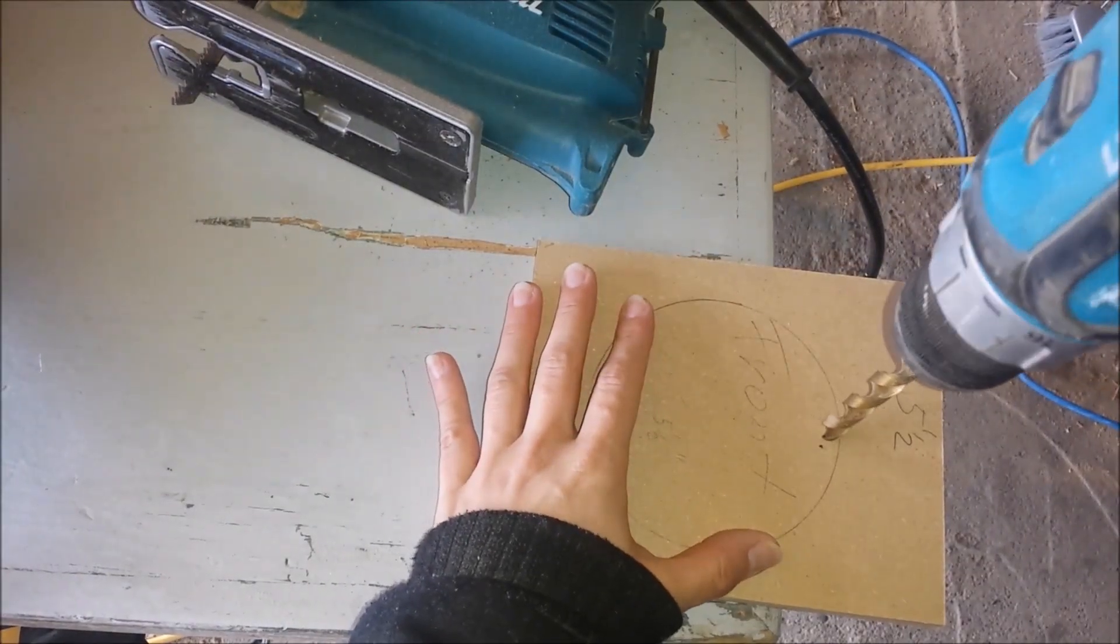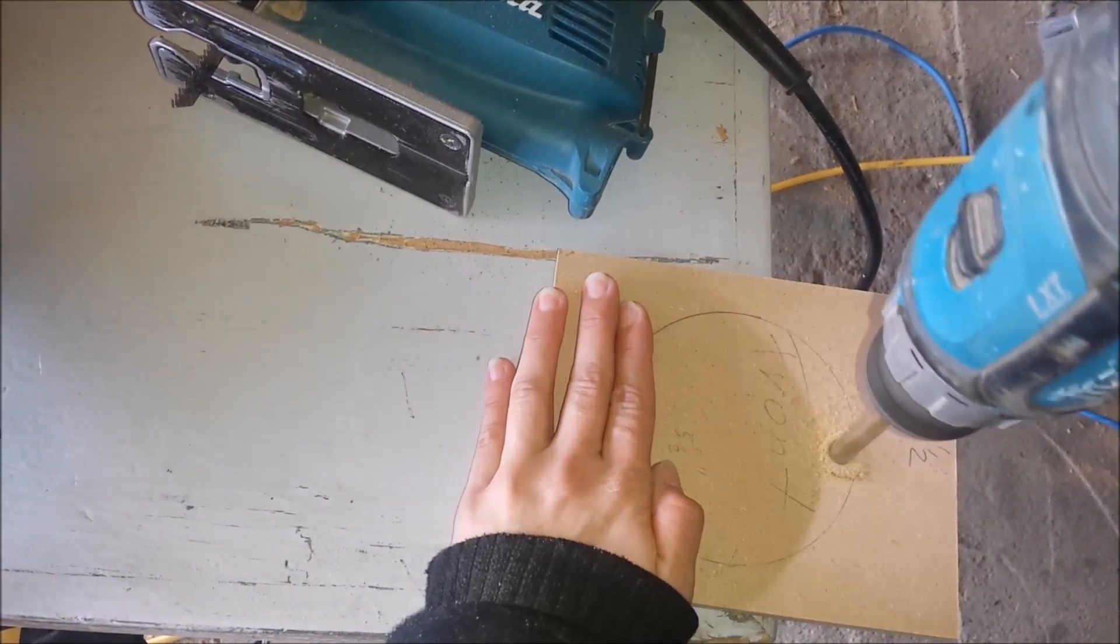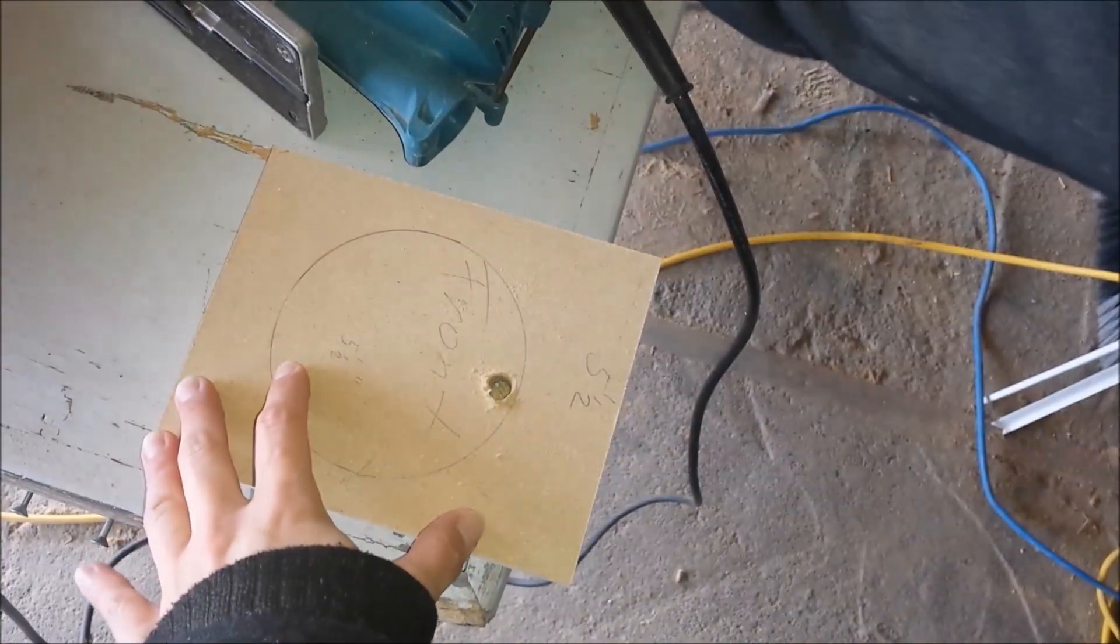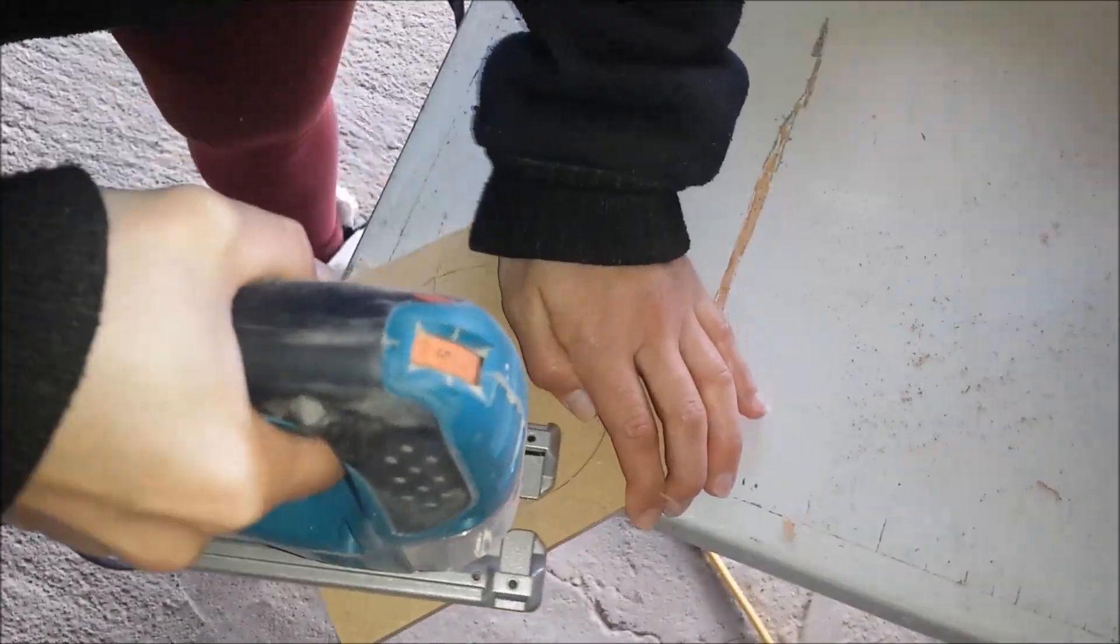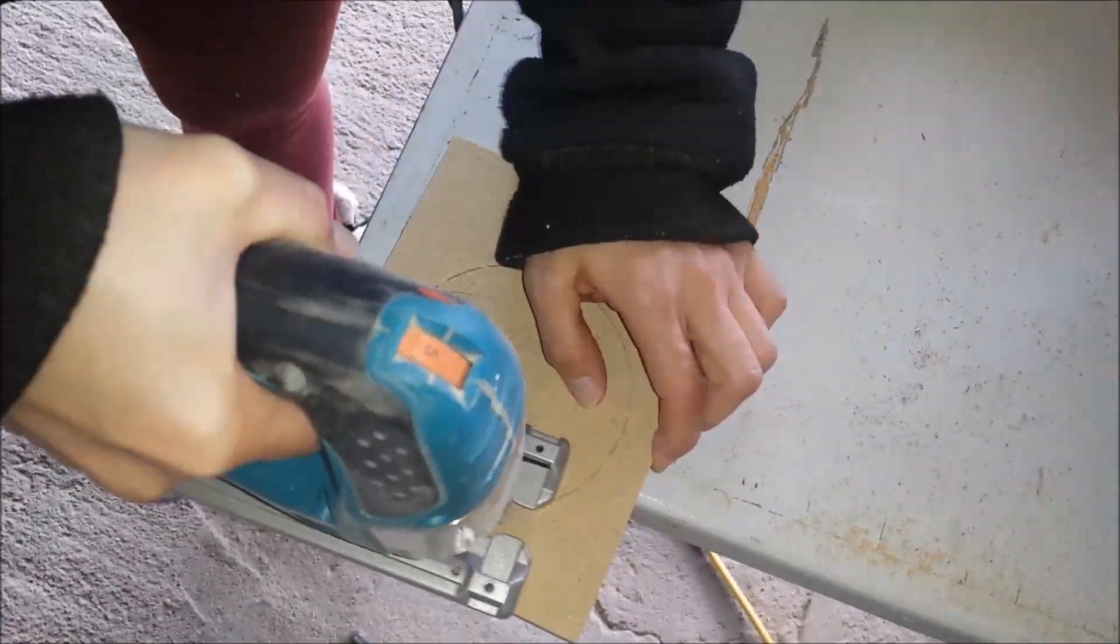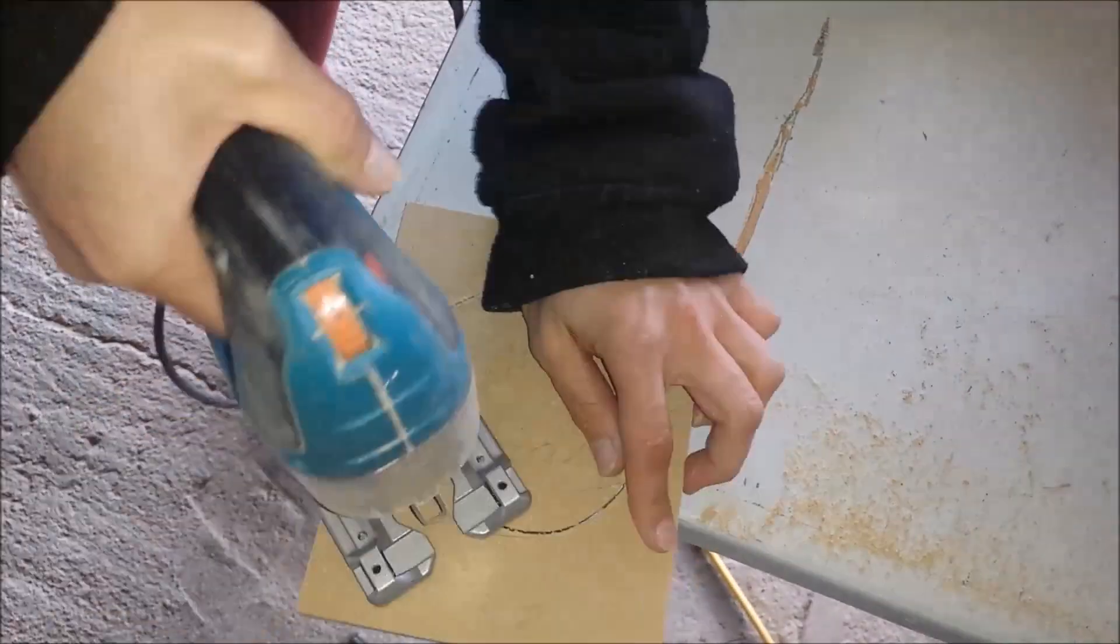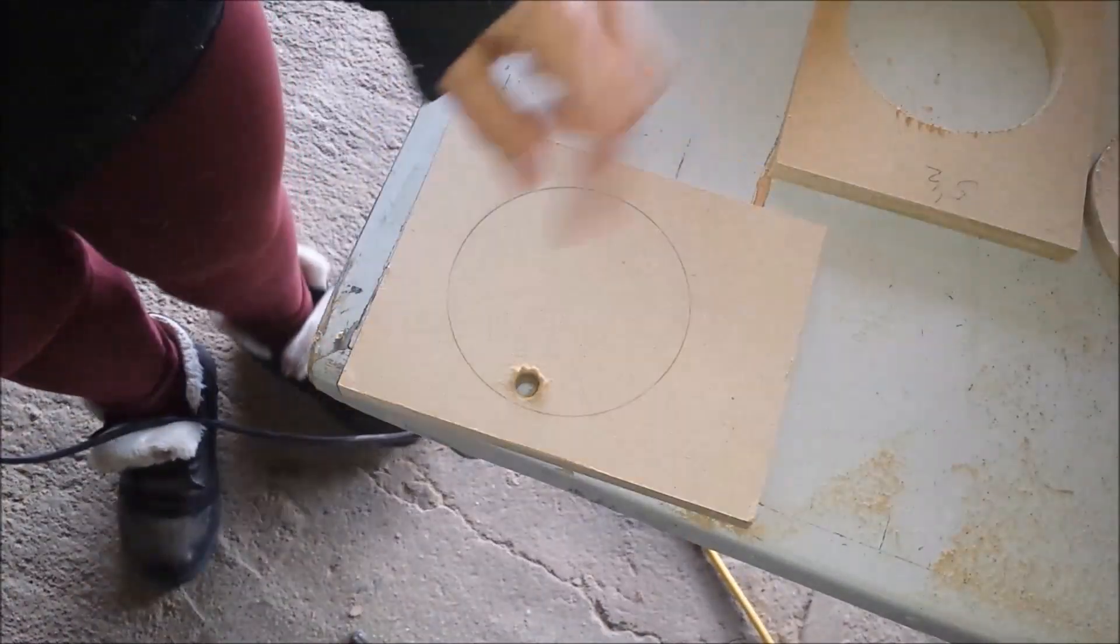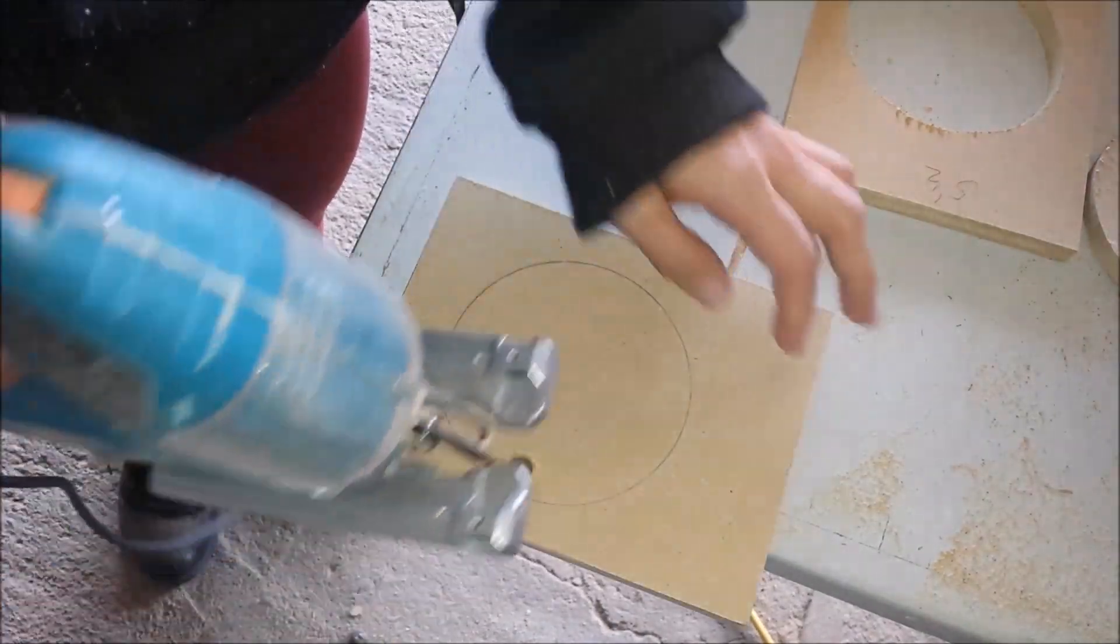I'm going to drill a hole with the drill, and then with the jigsaw I'm going to cut out the circle. I'll do the same on this one for the second piece.